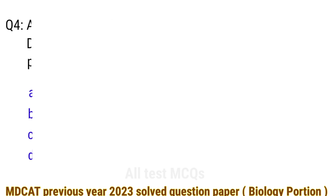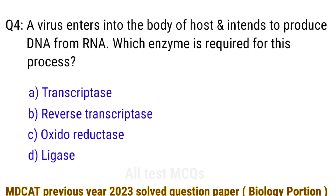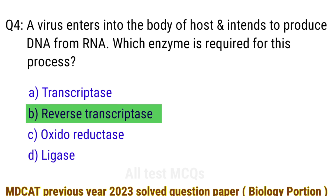Question number 4. A virus enters into the body of a host and intends to produce DNA from RNA. Which enzyme is required for this process? The right answer is option B: reverse transcriptase.